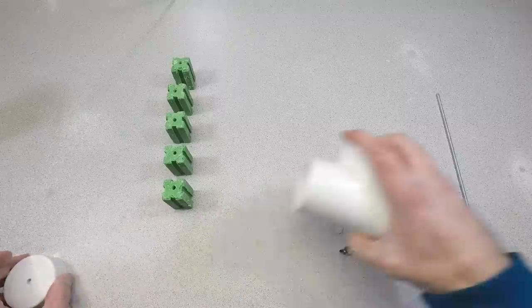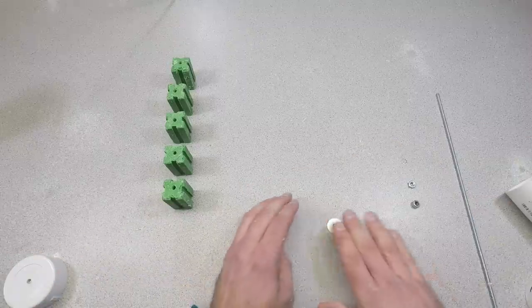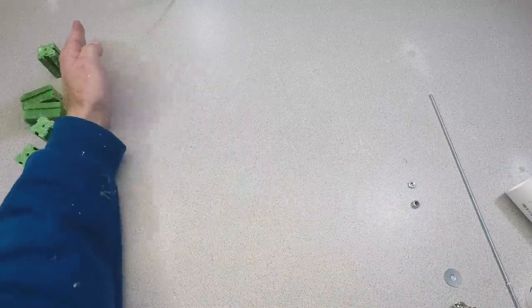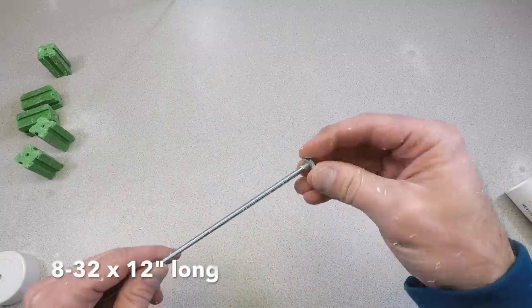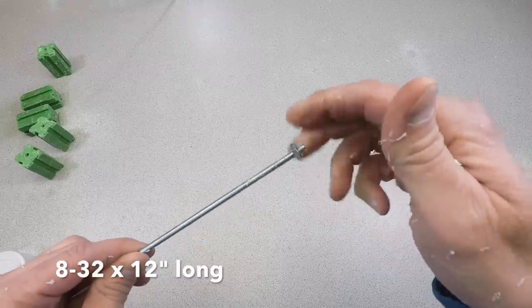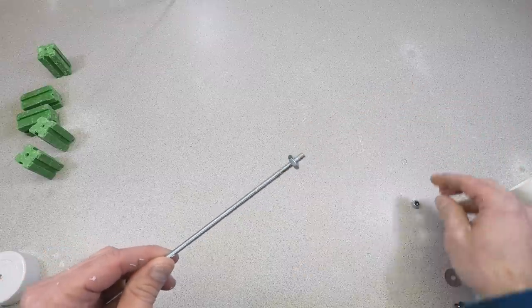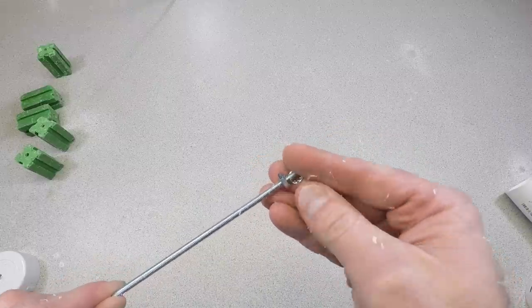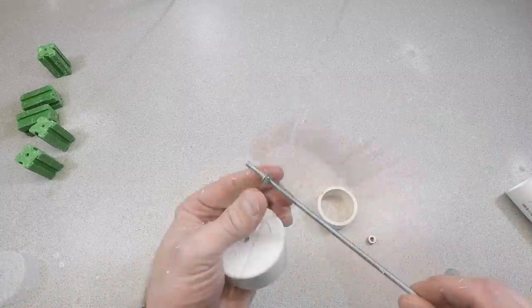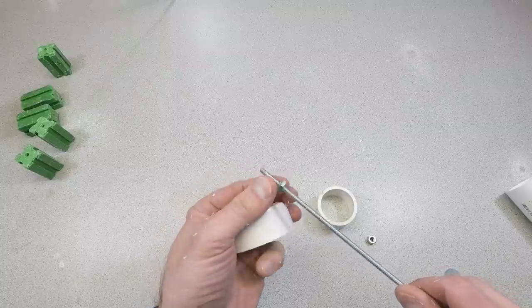Here's how to assemble your bait station. Thread your 8-32 nut onto the threaded rod. It's a good idea to use a lock washer. The rod I'm using is 10 inches long, which we will cut down to the proper length in a minute.